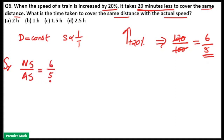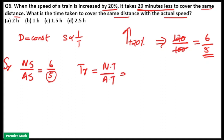So, actual speed is equal to 5 parts. When it is increased by 20%, it will become 6 parts. The time ratio will be new time divided by actual time, which is equal to the reverse of the speed ratio — that is 5 by 6. So actual time will become 6 parts and new time will become 5 parts.